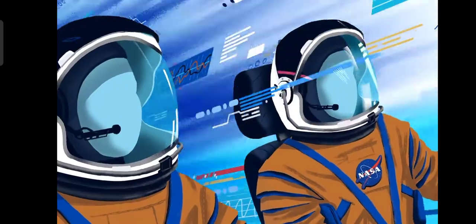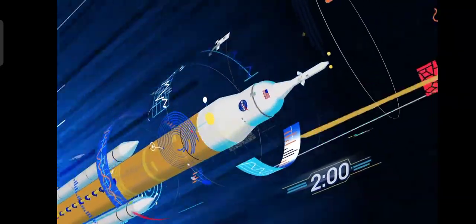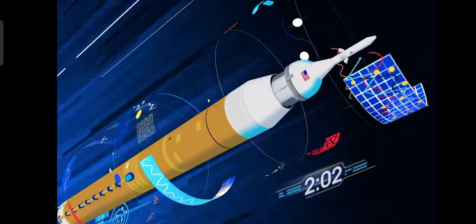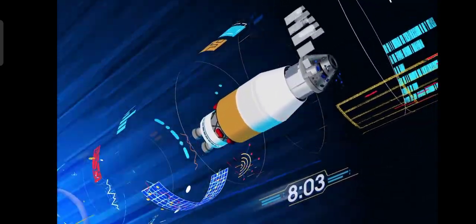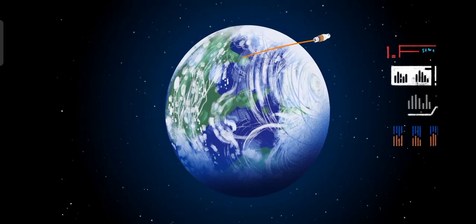Two minutes after ignition, the solid rocket boosters are spent and released. Eight minutes after launch, the core stage is depleted and separated. The upper stage fires briefly, placing Orion into a parking orbit around the Earth.